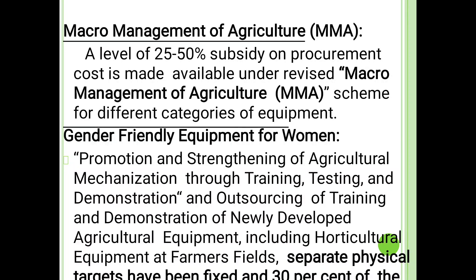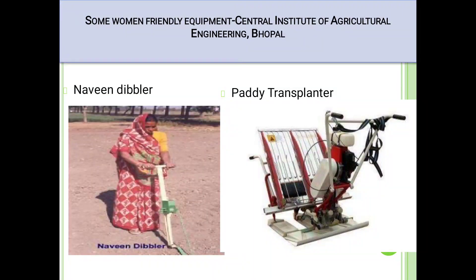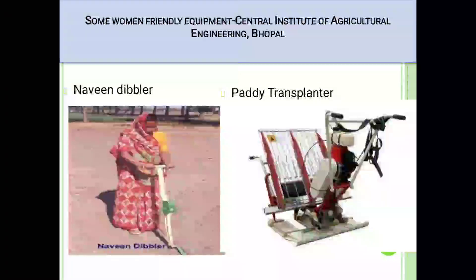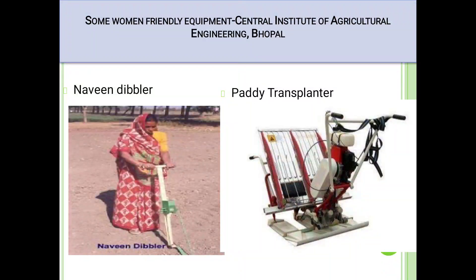Next is Macro Management Agriculture, i.e., MMA. A level of 25 to 50% subsidy on procurement cost is made available under the revised Macro Management of Agriculture scheme for different categories of equipment. Second is gender-friendly equipment for women. Promotion and strengthening of agriculture mechanization through training, testing, and demonstration. Outsourcing of training and demonstration of newly developed agricultural equipment including horticulture equipment at farmers' field. Separate physical targets have been achieved at 30% of the required. Some women-friendly equipment from Central Institute of Agriculture Engineering, Bhopal, are to be developed there.